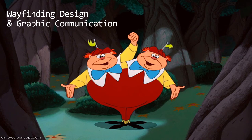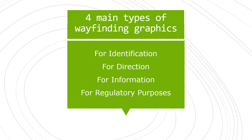Our last section covers wayfinding design and graphic communication and how it applies to us. Signage assists people in the decision-making process, helping them find their way. When a signage system has insufficient graphic cues, visitors become confused and lost. There are four main types of wayfinding graphics that we as designers would create: identification, direction, information, and regulatory.